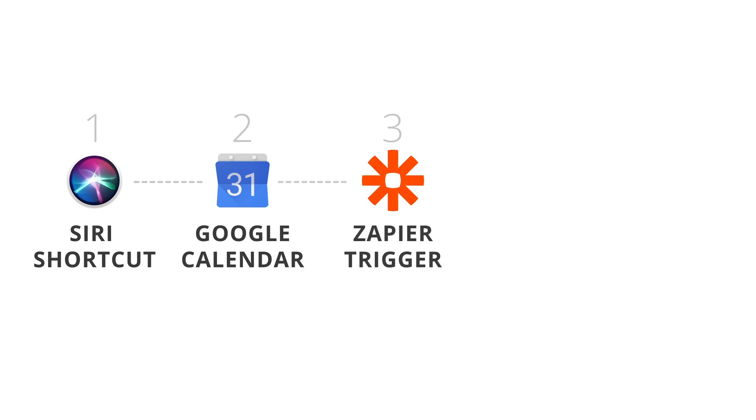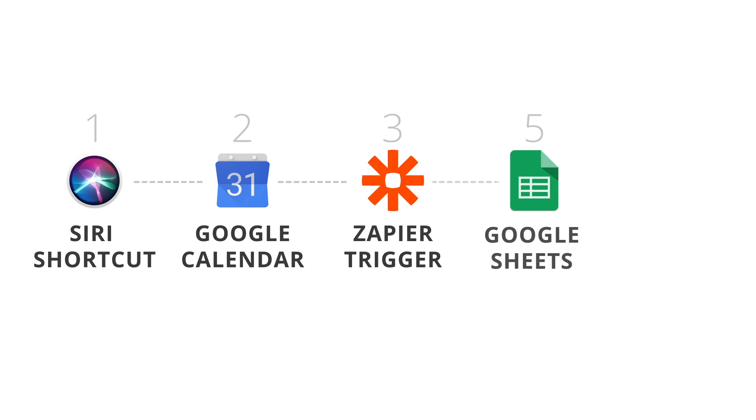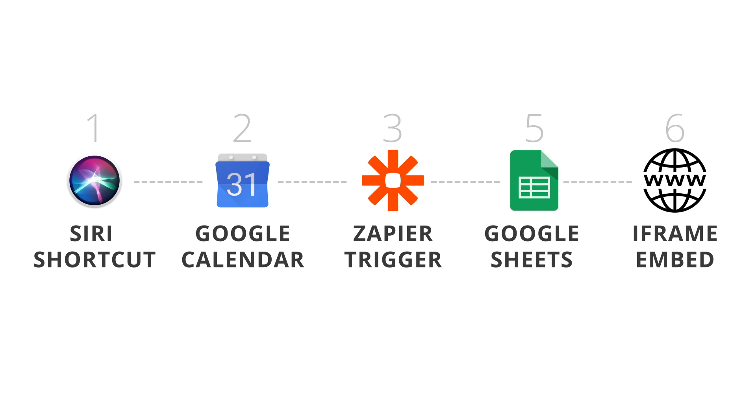That calendar syncs with my Google account via a Zap set up in Zapier. Zapier is the only paid part of this process — we're on a pro account for faster updates and multiple accounts. You can use Zapier for free, and I also had this working with IFTTT just as fast. The trigger is when a new event is added or updated, syncing it to a Google Spreadsheet.